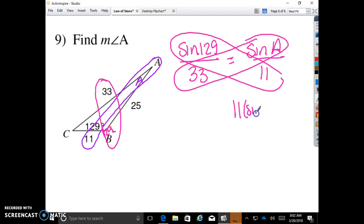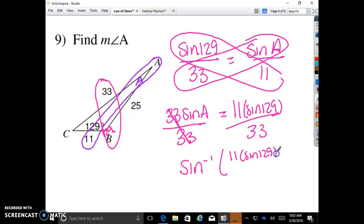11 times sine 129 equals 33 times sine A. So to get sine A by itself, we're going to divide by 33 on both sides. And then we're going to do the inverse. The inverse sine of 11 times sine 129 all over 33 equals angle A. So 129 sine times 11 equals divide by 33 equals second sine. I got 15.01362. So round to the nearest tenth, it's just going to be 15.0 degrees.